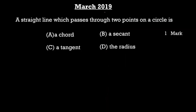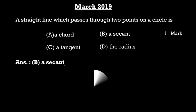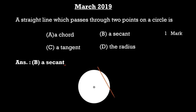Now, the March 2019 question paper. The question is: a straight line which passes through two points on a circle is — options are A: chord, B: secant, C: tangent, D: radius. The correct option is B: secant. In the diagram, PQ is a straight line which passes through two points A and B on a circle, so PQ is the secant of a circle.